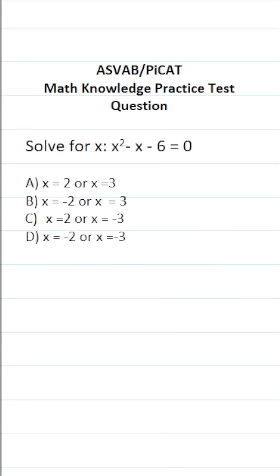This math knowledge practice test question for the ASVAB and PiCAT says solve for x. We have x squared minus x minus 6 equals 0.